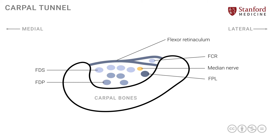The clinical features would be exactly where the median nerve supplies, presenting in the form of tingling, loss of sensation, or perhaps weakness of the muscles that the median nerve supplies distal to the carpal tunnel.